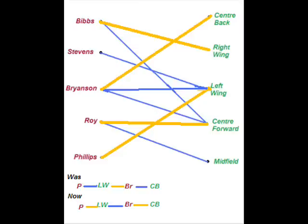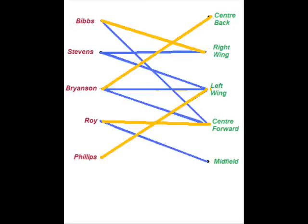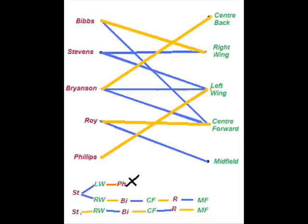Now if we can convince someone — let's say Stevens — to play on the right wing, then perhaps we can improve this. Starting with Stevens, he can go left wing or right wing. From the left wing, Phillips is currently connected to left wing but the problem is if we take Phillips off the left wing he has nowhere to go, so that doesn't lead anywhere. So going back to the right wing route, we take Bibbs off the right wing. Now Bibbs can play centre forward, so that blue will change — it's currently a blue. Centre forward is currently being played by Roy, so that's currently a yellow going from centre forward to Roy, and from Roy to midfield is blue. Now we're going to replace all of those with the complete opposite.